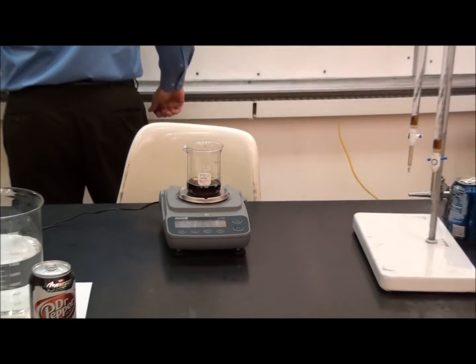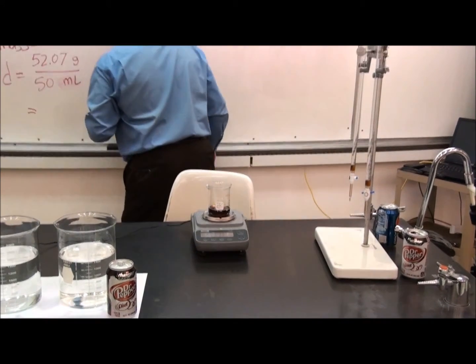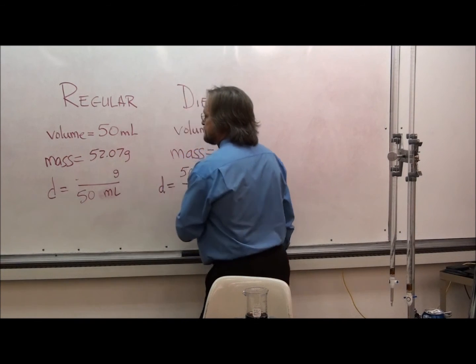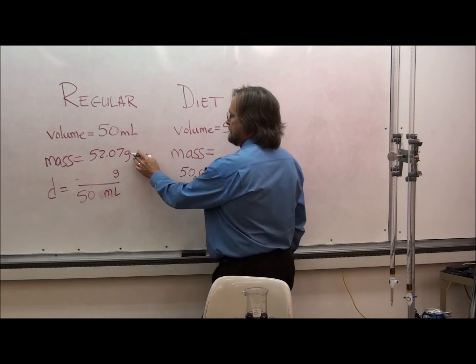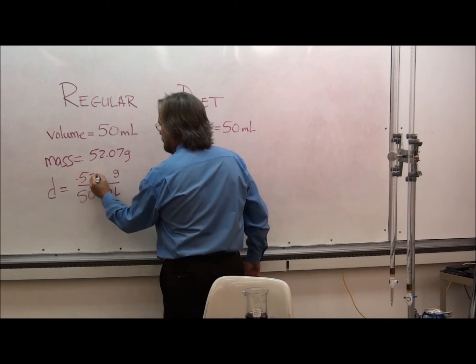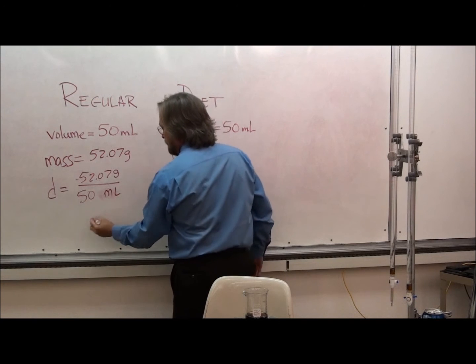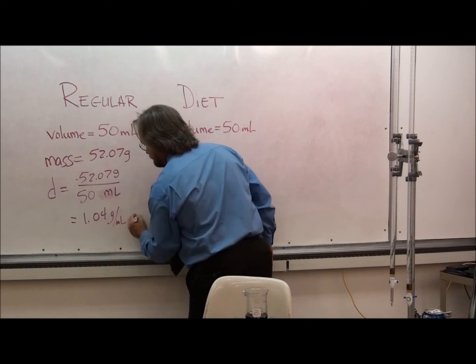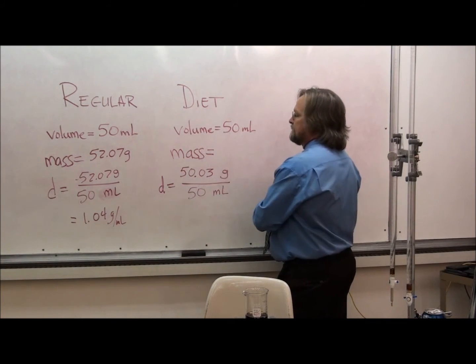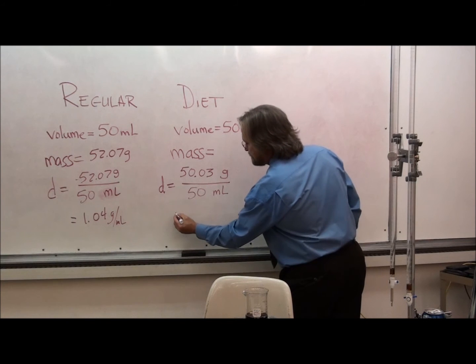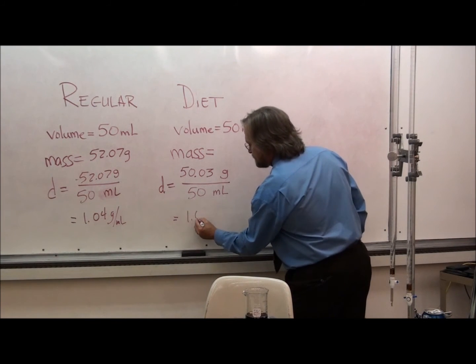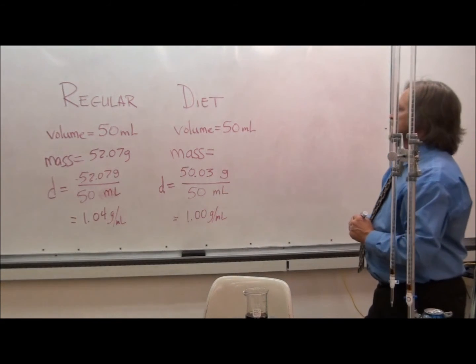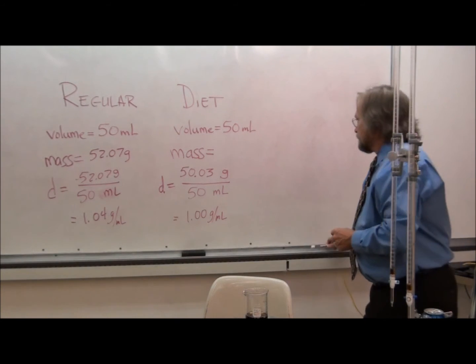We will now calculate the density of the regular Pepsi and the Diet Dr. Pepper. We take 52.07 grams for the regular Pepsi and divide by the volume of 50 milliliters, getting a density of 1.04 grams per milliliter. In other words, it's slightly more dense than ordinary water. For the Diet Dr. Pepper, we get a density rounded to three significant digits of 1.00 grams per milliliter. So we see that regular Pepsi is slightly more dense than Diet Dr. Pepper.